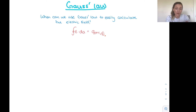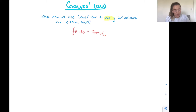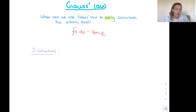Today's video is going to be a review of Gauss's law. We're going to talk about the three situations where you can use Gauss's law to easily calculate the electric field. Easily is the most important word there, because Gauss's law is always true, but it's not always useful. There are only three situations with sufficient symmetry: plane symmetry, cylindrical symmetry, and spherical symmetry.